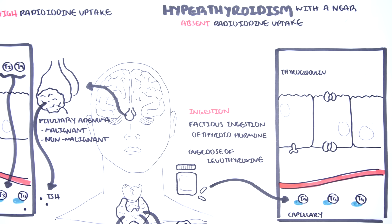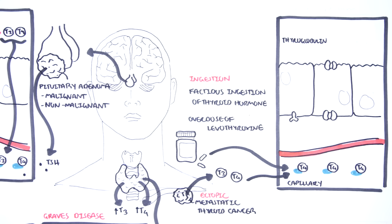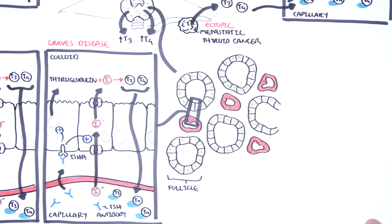Ectopic production of thyroid hormones from thyroid cancer metastasis to other organs — for example, metastasis to the bones — is another cause. This metastatic thyroid cancer can begin to produce thyroid hormones, increasing thyroid hormone levels. This is placed under hyperthyroidism with near-absent radioiodine uptake, though technically there is an increase in thyroid hormone synthesis.